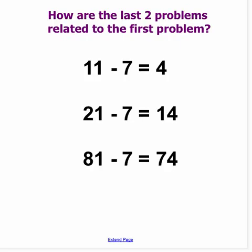Let's take a look at another type of fact extension. How are the last two problems related to the first problem? I have in my first problem 11 minus 7 equals 4. The second one is 21 minus 7 equals 14. And the third one I have 81 minus 7 equals 74. What I'm noticing is that there is a number 7 which is not changing. It's the same in every single problem. I'm also noticing that these first numbers are changing. I went from 11 up to 21. That's an increase of 10.